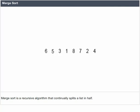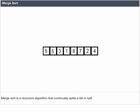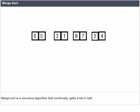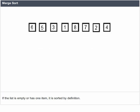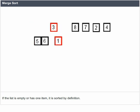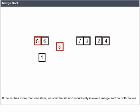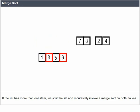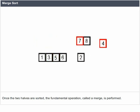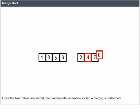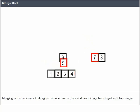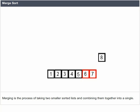Merge Sort is a recursive algorithm that continually splits a list in half. If the list is empty or has one item, it is sorted by definition. If the list has more than one item, we split the list and recursively invoke Merge Sort on both halves. Once the two halves are sorted, the fundamental operation called a merge is performed.